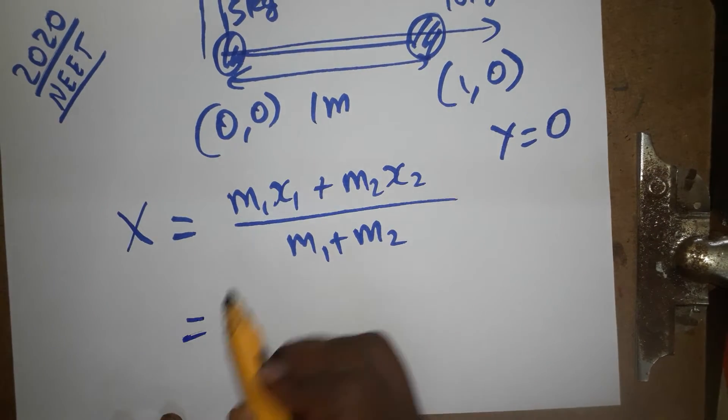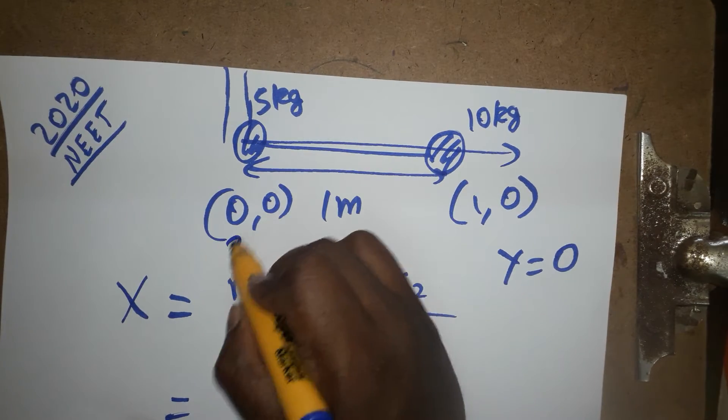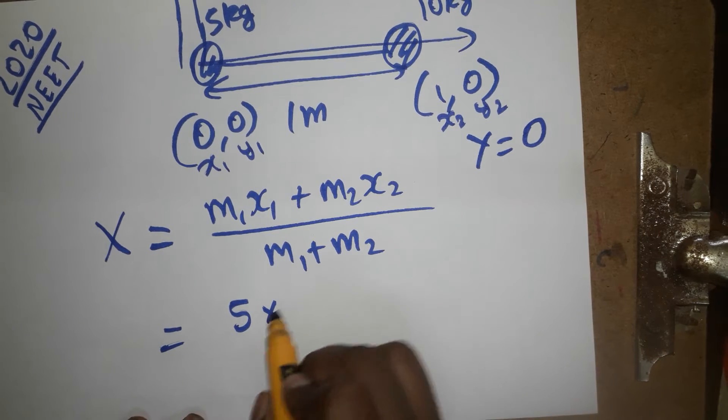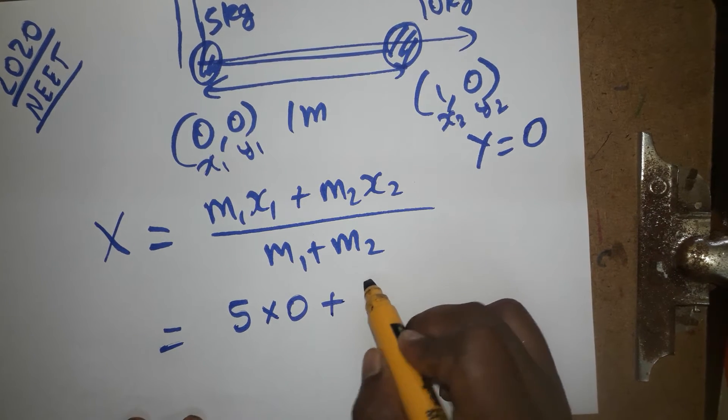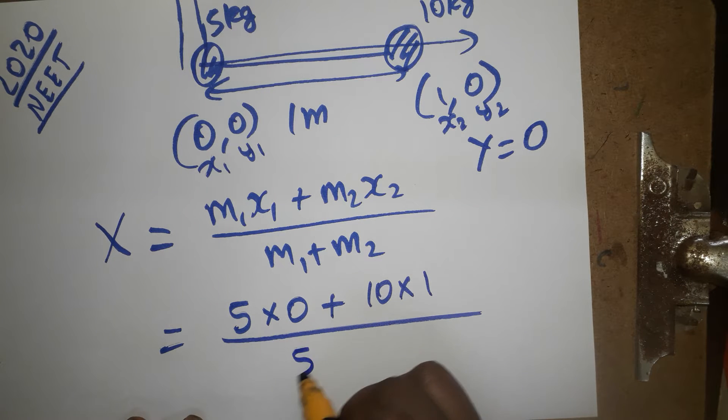Now x-axis, m1 is how much here, 5. It is m1 distance is going to be x1, y1, x2, y2. So x1 will be 0 plus m2, how much distance is 10 kg? The distance is going to be 1 meter divided by 5 plus 15.